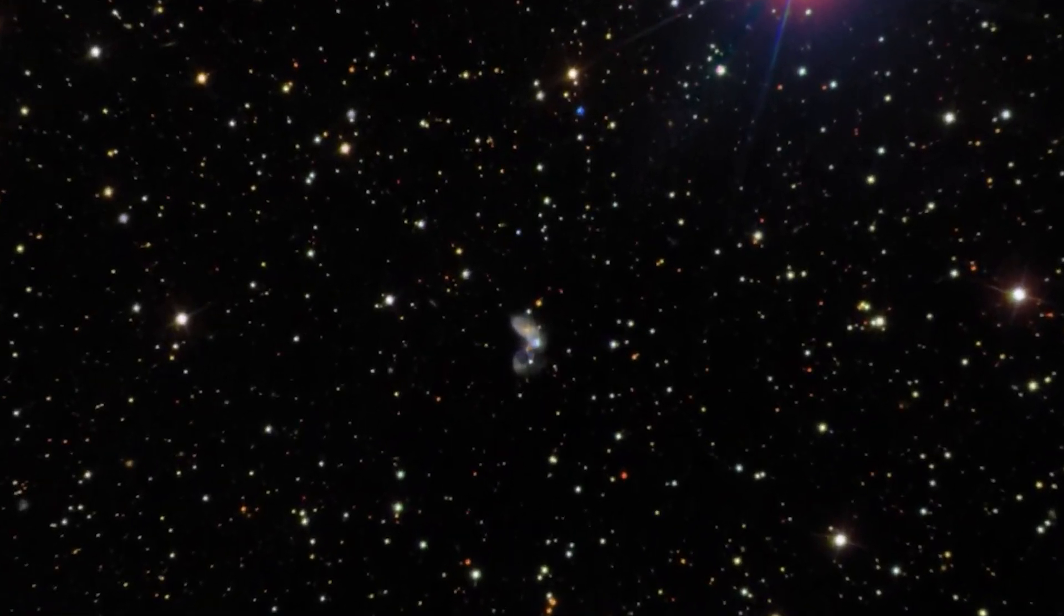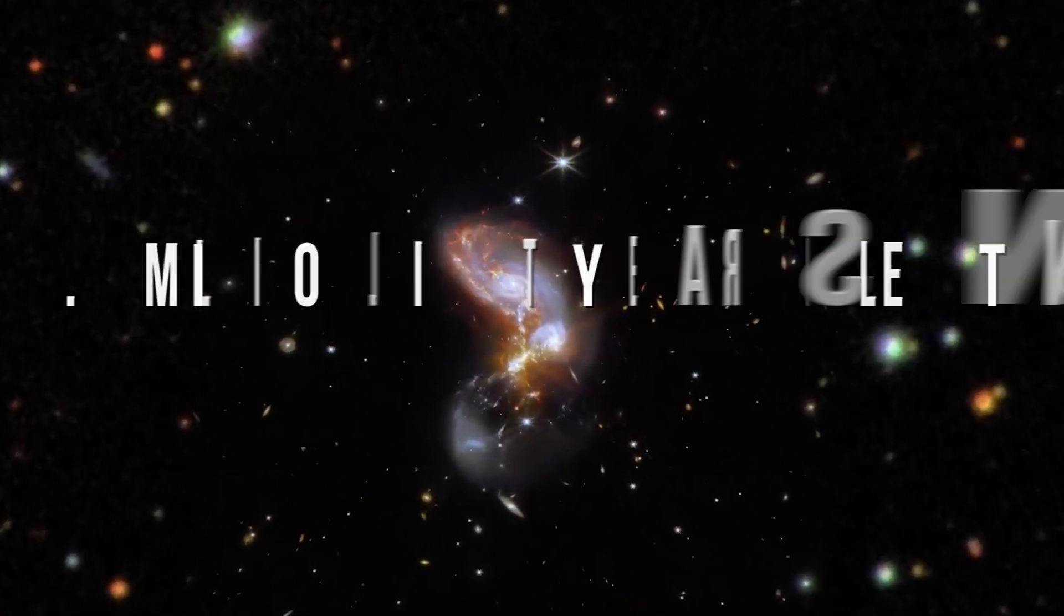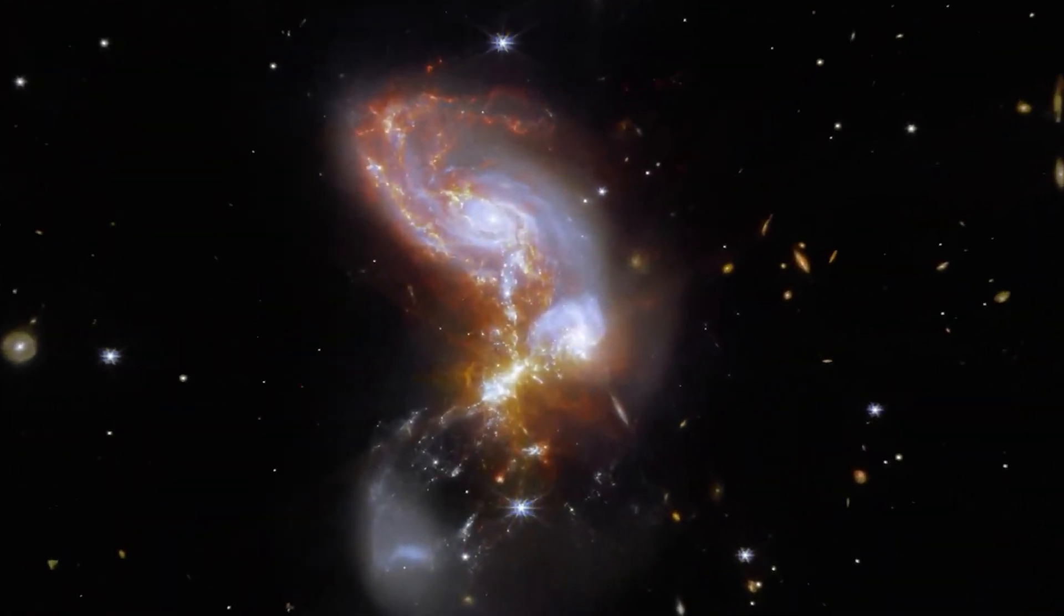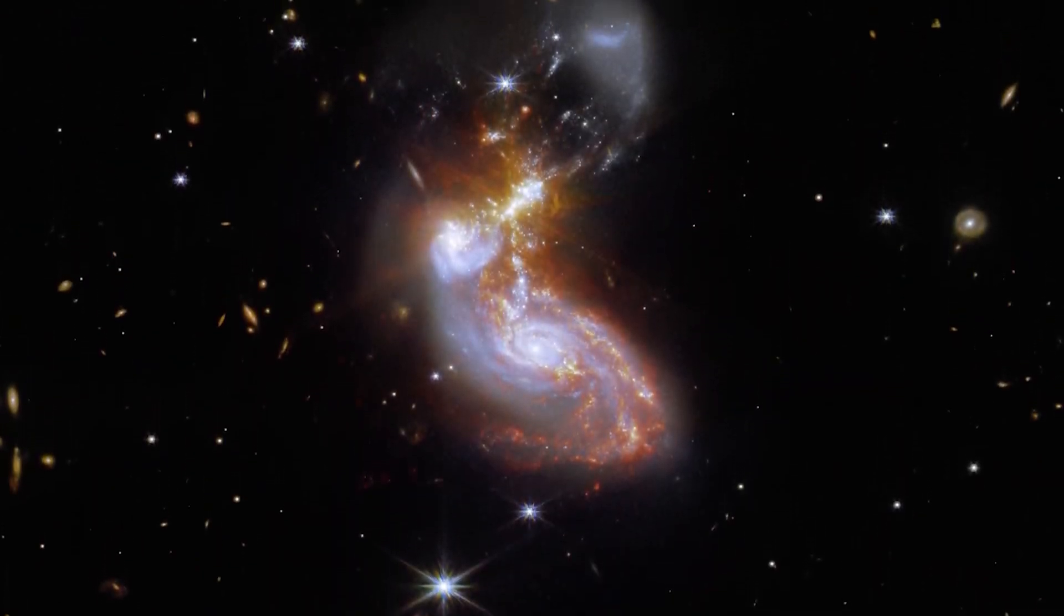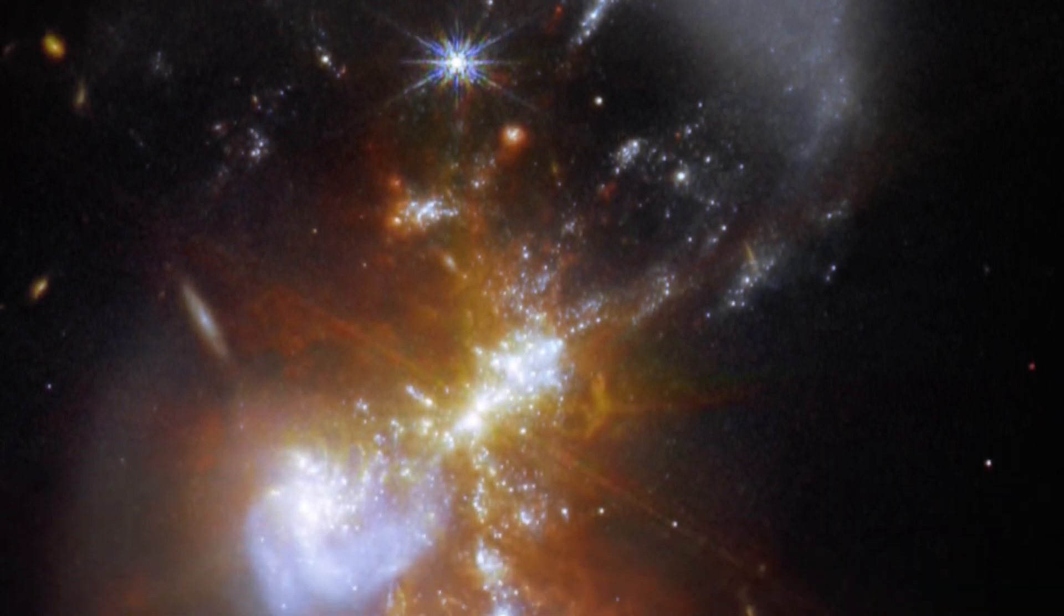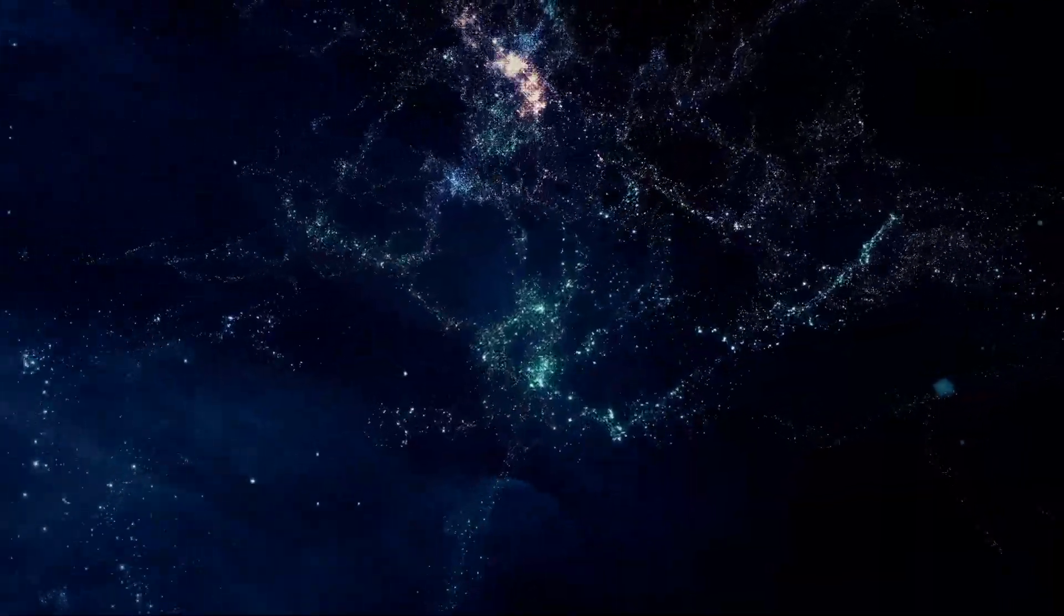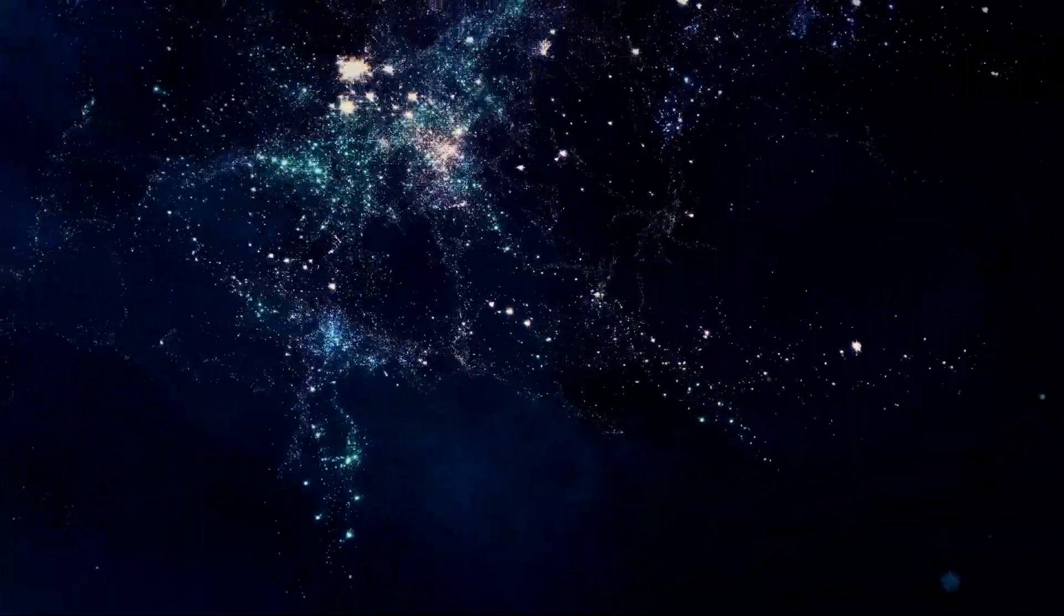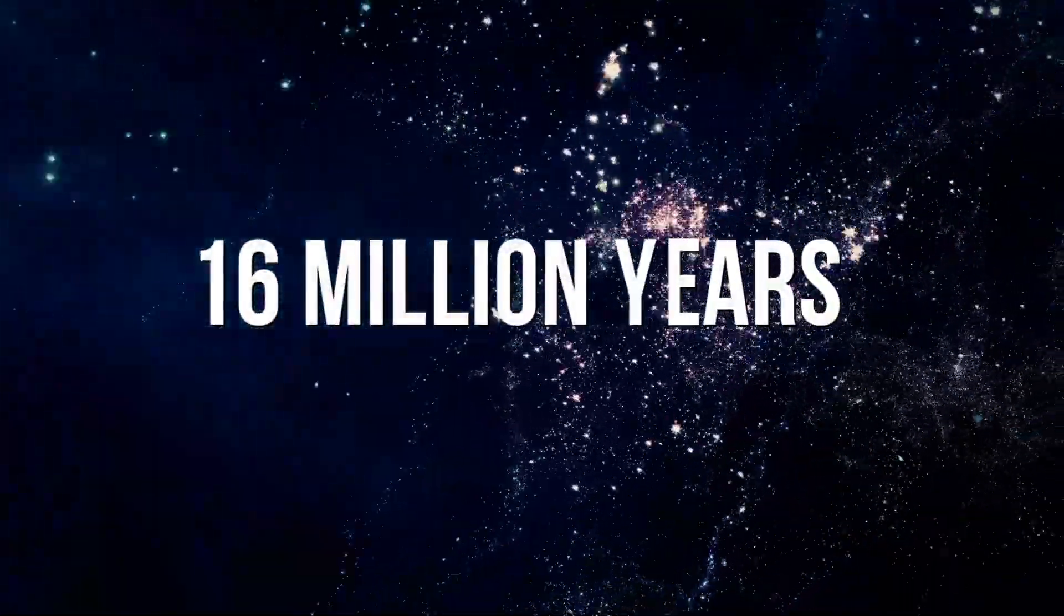It is estimated to be over 16.3 million light years in length, making it one of the largest galaxies known to exist. Its massive size has led scientists to believe it is one of the oldest galaxies in the universe, dating back to when galaxies were first beginning to form. To put its size into perspective, if you were to travel across the Elkinese galaxy at the speed of light, it would take you over 16 million years to reach the other side.